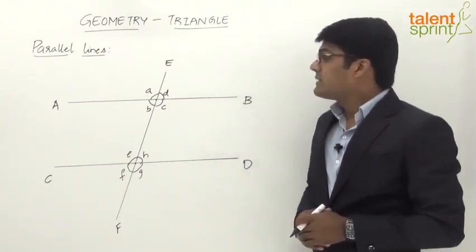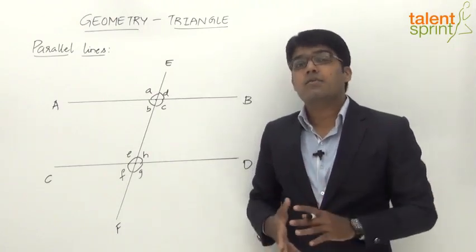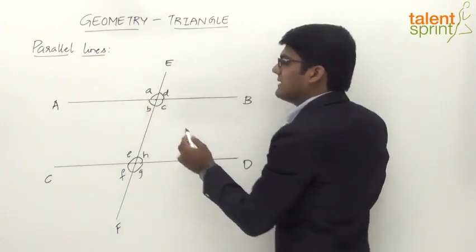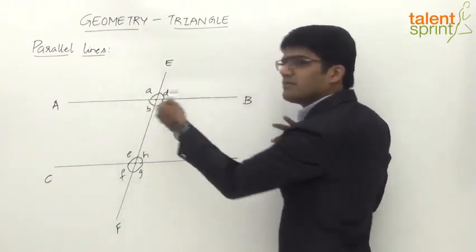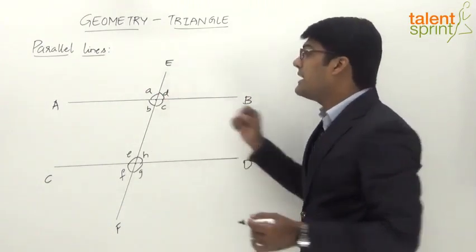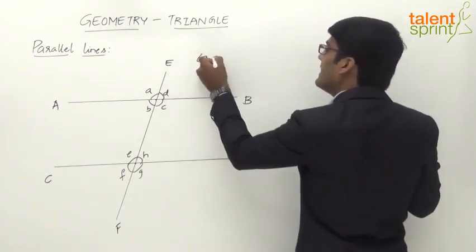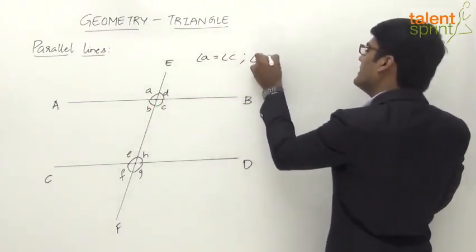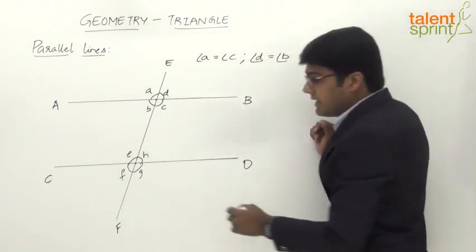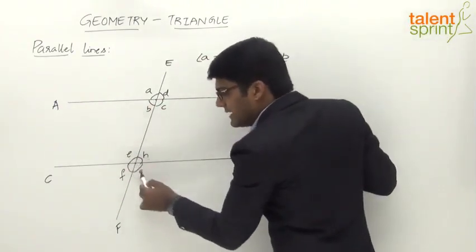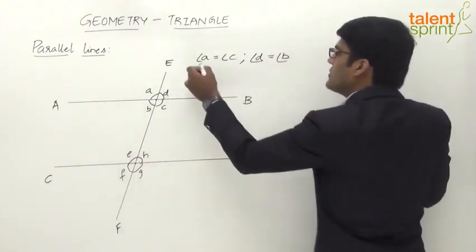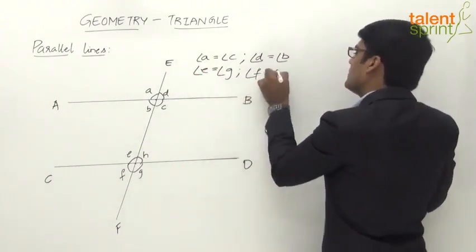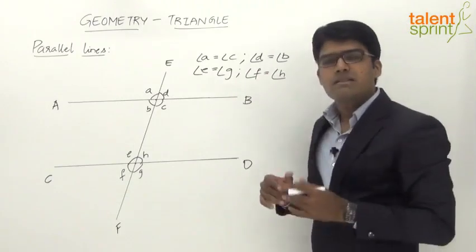Next, vertical angles — also called opposite angles — are always equal. At the first intersection: angle A equals angle C, and angle D equals angle B. At the second intersection: angle E equals angle G, and angle F equals angle H. These pairs of opposite angles are known as vertical angles.